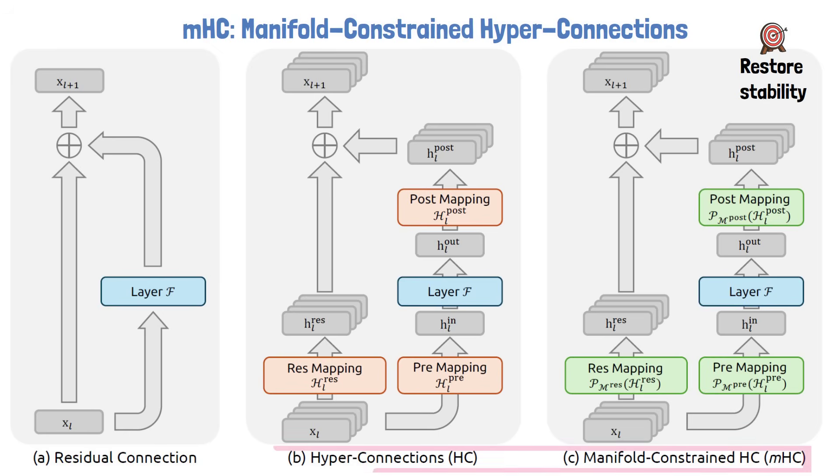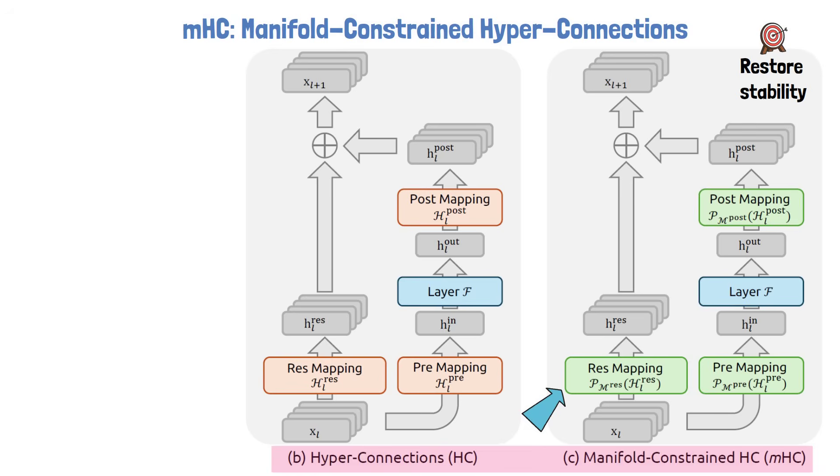If we look at the illustration, the manifold constrained hyperconnections block is almost identical to the hyperconnections block we just reviewed. The structure is the same, and information flows in the same way. The crucial difference is at the bottom, where the residual mixing matrix change, as it is no longer unconstrained. Instead, it is now subject to additional structural constraints designed to stabilize signal propagation across layers. Rather than allowing the residual mixing matrices to tick arbitrary values, manifold constrained hyperconnections enforces two constraints on the residual mixing matrix.